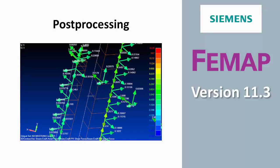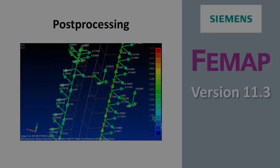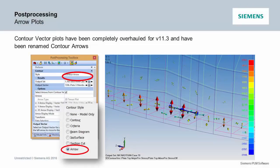Welcome to the Femap version 11.3 What's New video series. In post-processing, we did a complete overhaul of what we now call our arrow plots. They used to be called contour vector plots, which was kind of confusing because we had contour plots and data vector output vectors — they really didn't have anything to do with each other. We were making arrows, so we now call them arrow plots.